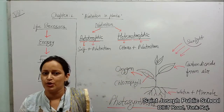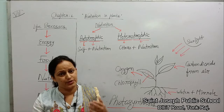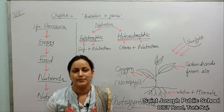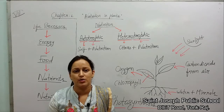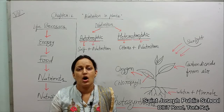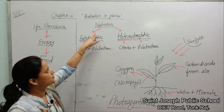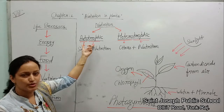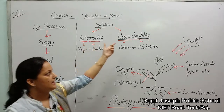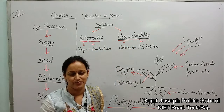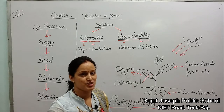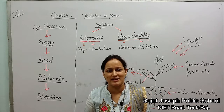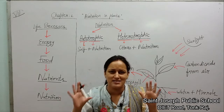Now we have to understand what life processes are. There are energy requirements; energy we obtain from food. Food contains seven types of nutrients, and the intake and utilization of those nutrients is called nutrition. On the basis of the mode of nutrition, nutrition is of two types: autotrophic nutrition and heterotrophic nutrition. Science is a beautiful subject — it is not a subject for cramming; it is a subject to understand.